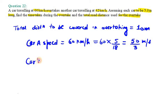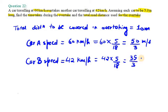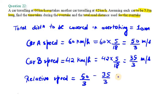Now we need to write the speed for car B, then we need to find the relative velocity, speed of car A with respect to car B. So the relative speed will be 50 over 3 minus 35 over 3. This will be 15 over 3 which can be reduced to 5 meter per second.